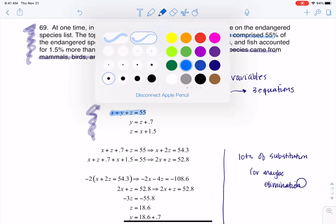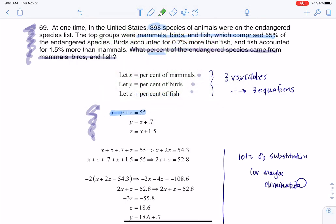And so then when we move on to the next sentence it says birds accounted for 0.7 percent more than fish. So I see birds here so I'm going to be using a y, and I see 0.7 percent so I'll remember that number. I see fish, so I also know I'm going to use a z, and really the other key piece is this 'more' that indicates addition. So as we look at our second equation we have birds accounted for 0.7 percent more than fish and that's where I'm getting this second equation.